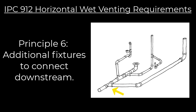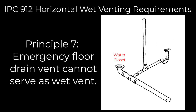We're going to pipe around the bathroom group so that it does not interfere with our horizontal wet vent. Principle six: any additional fixtures are to connect downstream from the wet-vented bathroom group. Principle seven: an emergency floor drain cannot serve as a wet vent for a bathroom group, because an emergency floor drain would rarely be receiving fluids, and the point of a wet vent is that it would occasionally be washed through.